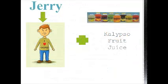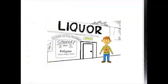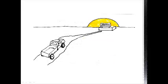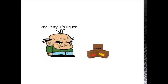Meet Jerry — he has a passion for Calypso fruit juice. Jerry typically visits his local liquor store, JJ's Liquor Market, for the two-for-one special on Calypso every day. In order to meet Jerry's demand, the store owner of JJ's Liquor visits Costco to purchase cases of Calypso, replenishing stock to meet Jerry's demand.